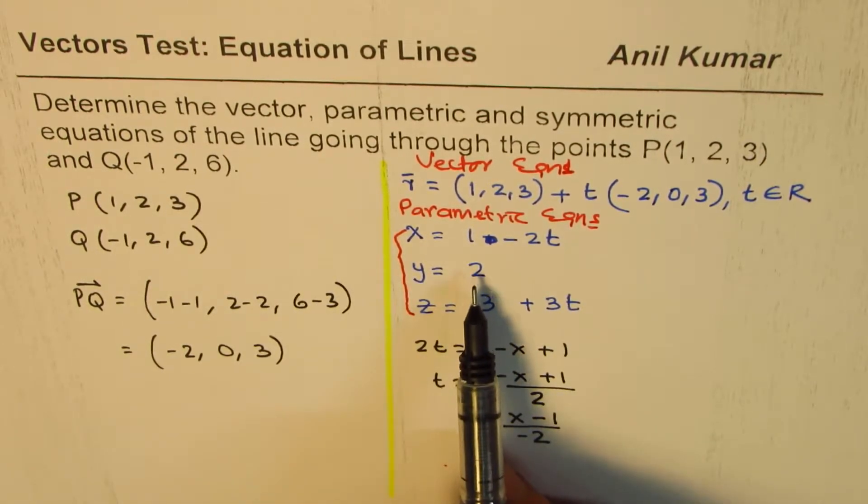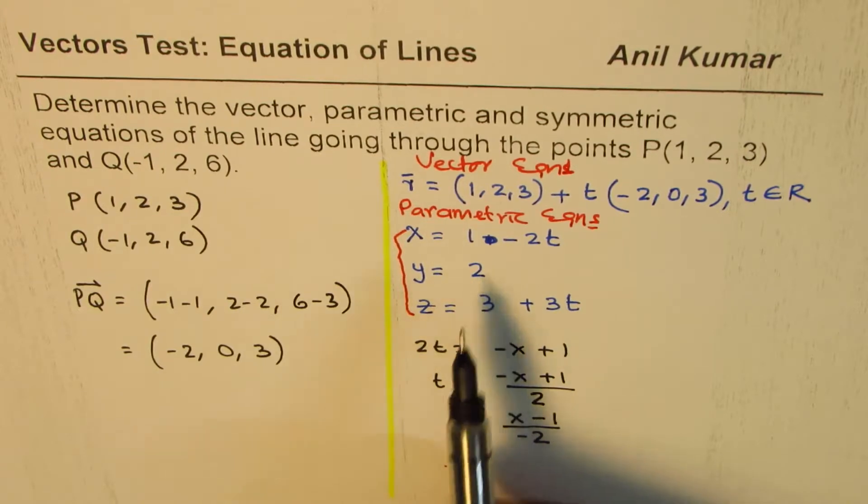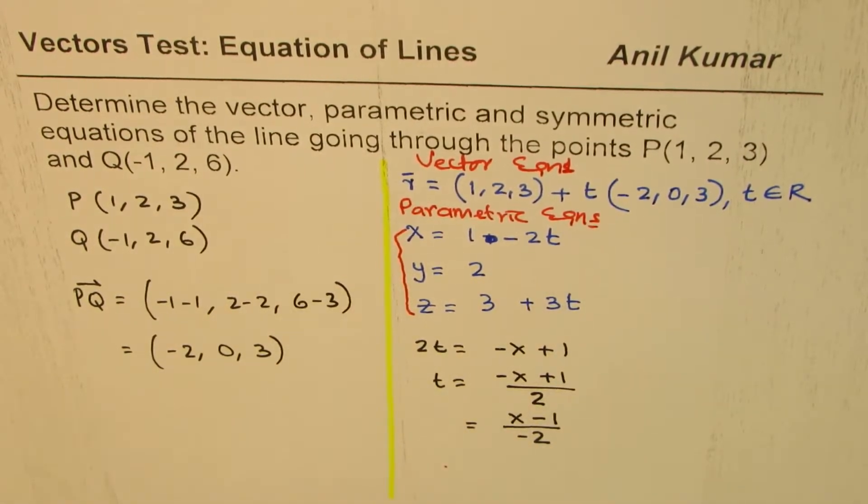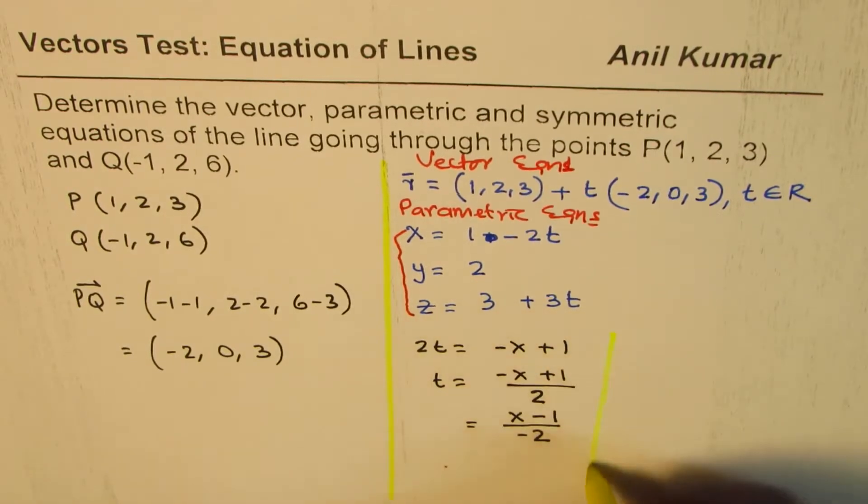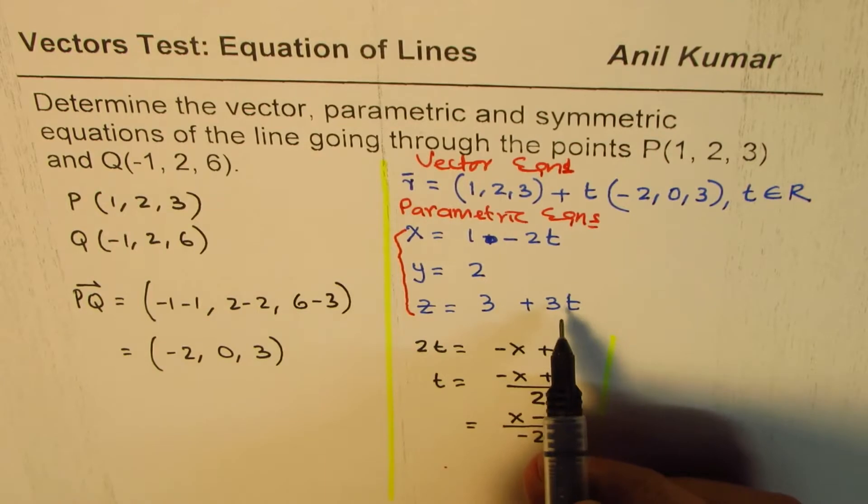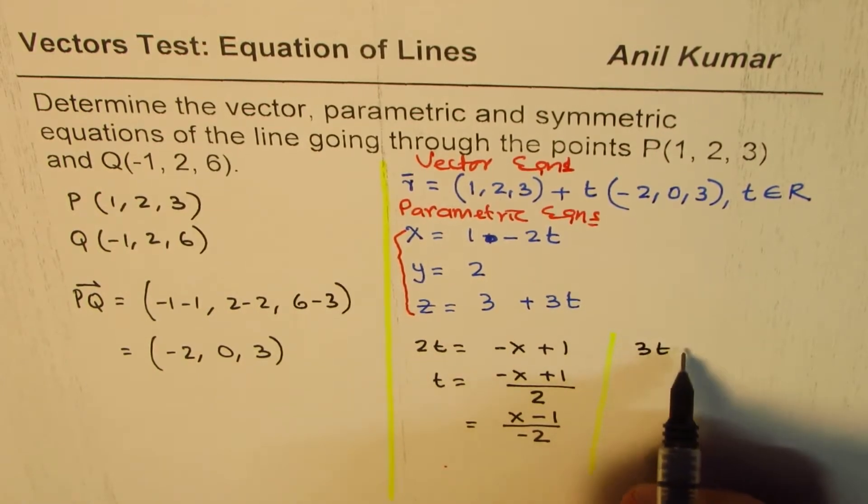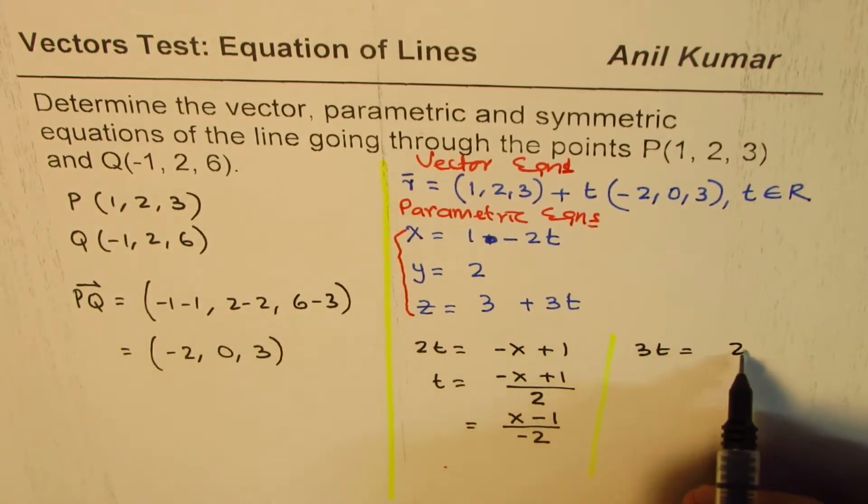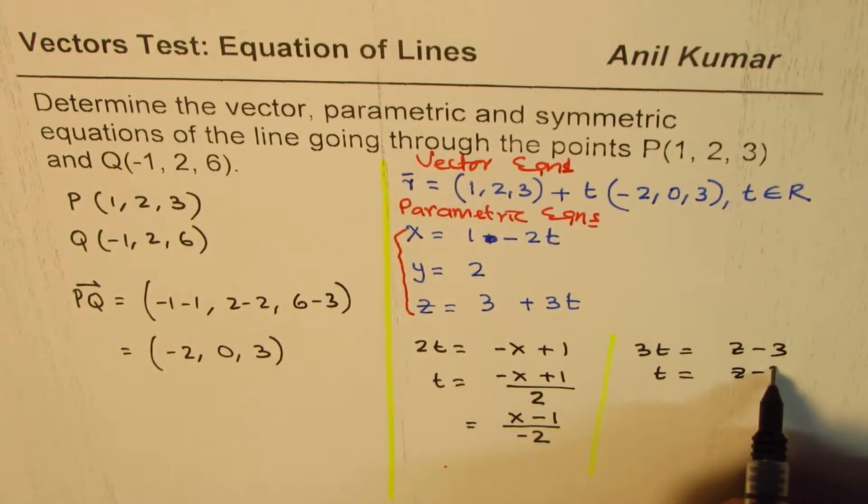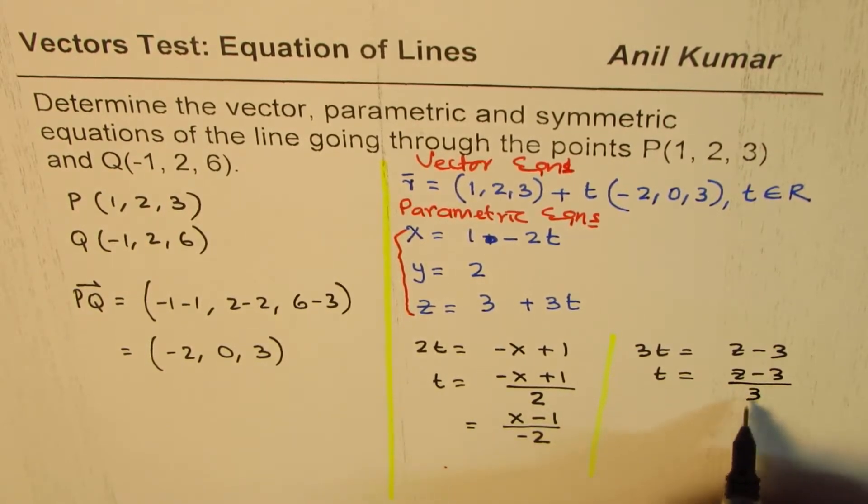Y equals 2 always. That means the direction in this is 0. And as far as z is concerned, let me rewrite this also. So what we get here is 3t equals z - 3, or t equals (z - 3)/3. Do you see that?